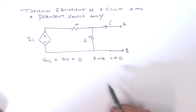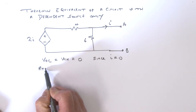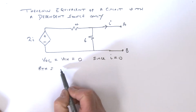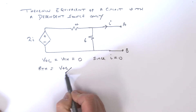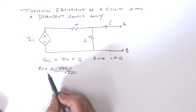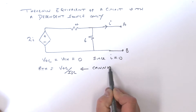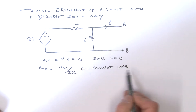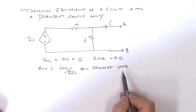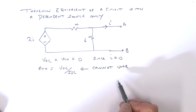What about the Thévenin resistance? In the past, when we had independent and dependent sources, the Thévenin resistance was equal to the open circuit voltage divided by the short circuit current. However, we really cannot use this relation here to find the Thévenin resistance. So we've got to think of another way to deal with this problem.